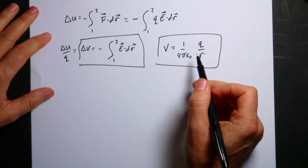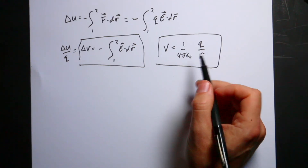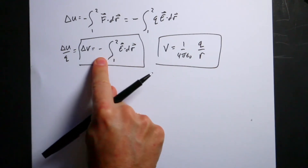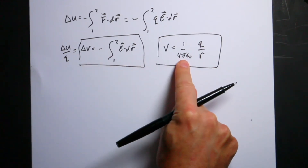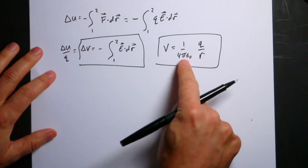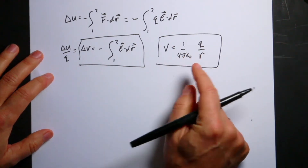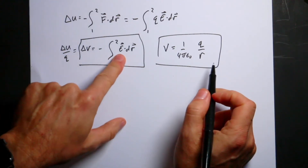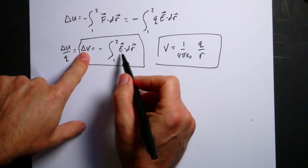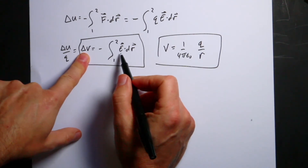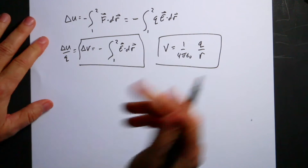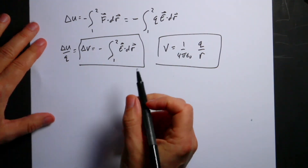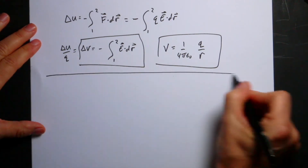If you understand the definition of potential and the potential due to a point charge, you can do pretty much everything. If you have more than one point charge, just add up the potentials. If you know the electric field, you can integrate along a path to find the change in potential — that may come up on the test too.